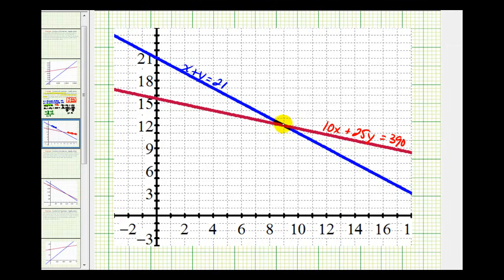Therefore, this point of intersection represents our solution. Where the x coordinate represents the number of dimes, which is 9. And the y coordinate represents the number of quarters, which is 12.